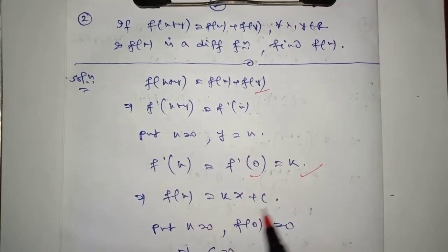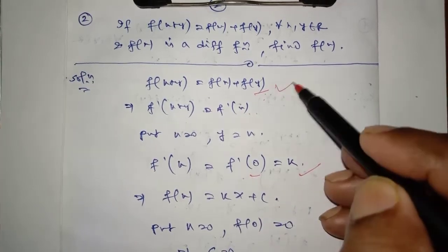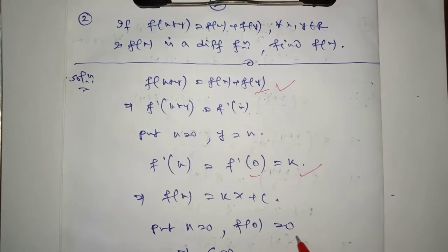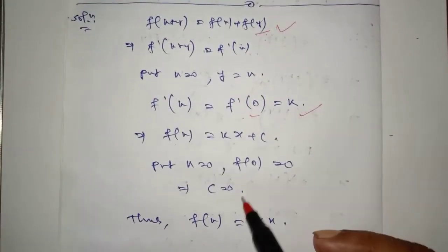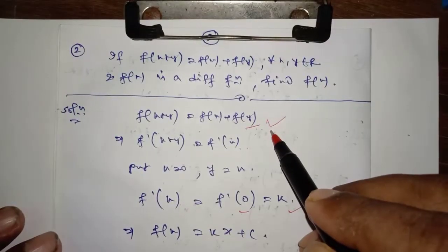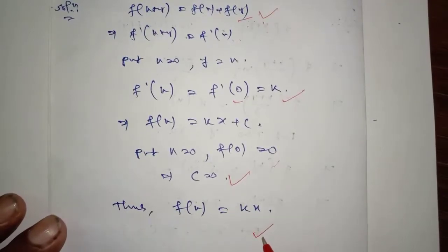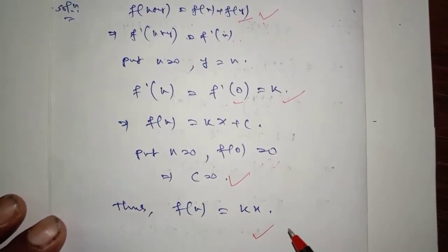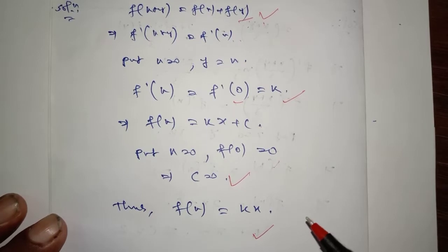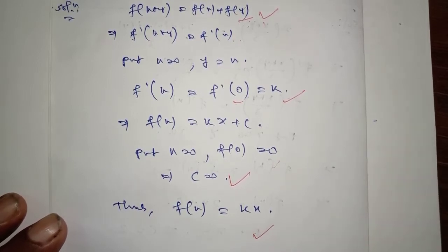Abb isse integrate karo: f(x) = kx + c. Put x = 0, to f(0) ka value 0 hoga, so c = 0. Therefore f(x) = kx. Sometimes kisi questions mein statement given na ho, directly you can consider f(x) = kx. Iska answer bhi ratke rakhna — kaafi jagah pe aisa question diya jayega. Directly aapko apply karna padega. All the very best.